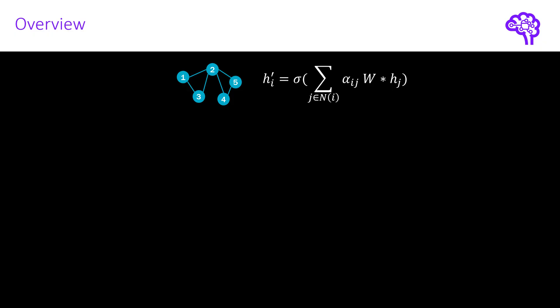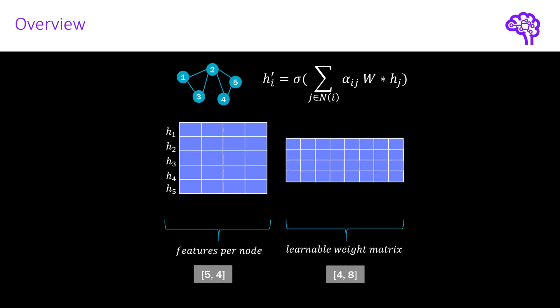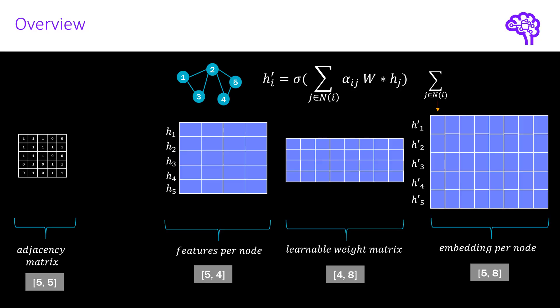So let's go back to the overview from before. There is only one thing we need to add here. We still multiply the node feature matrix with the learnable weight matrix and multiply all of that with the adjacency matrix. This gives us the new embeddings for each of the nodes. The new part now is that we add the attention coefficients in the summation.